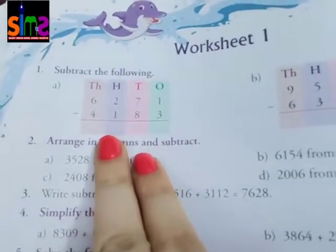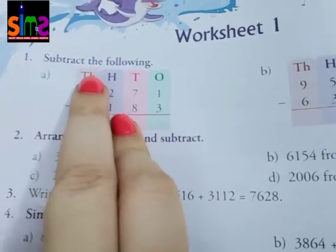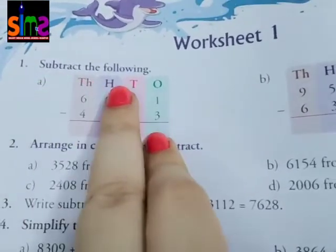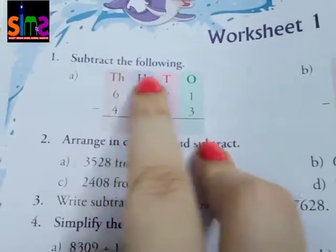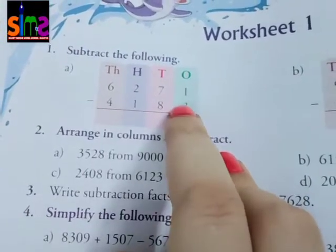The first question asks to subtract the following. You've done the whole chapter of subtraction, so first you have to write place values: ones, tens, hundreds, thousands. Then write place values below all digits. It's simple - just subtract.